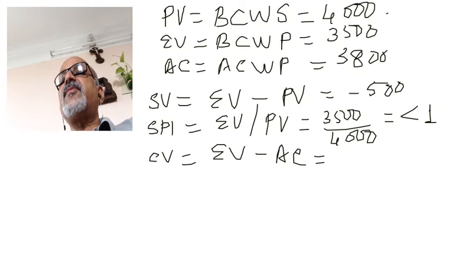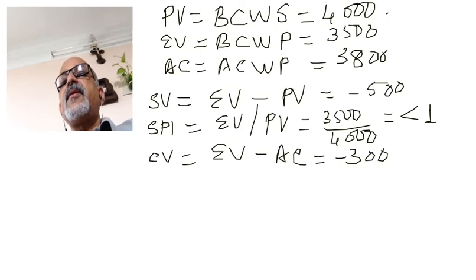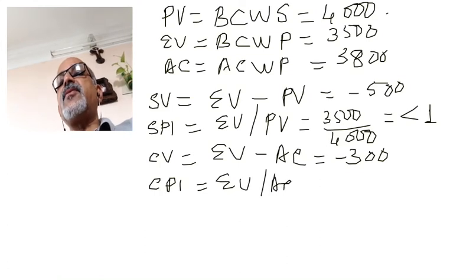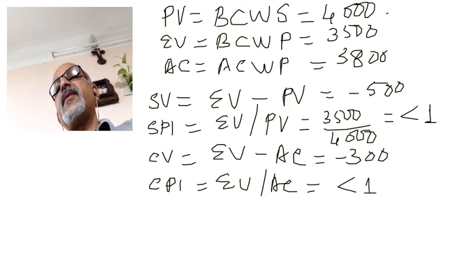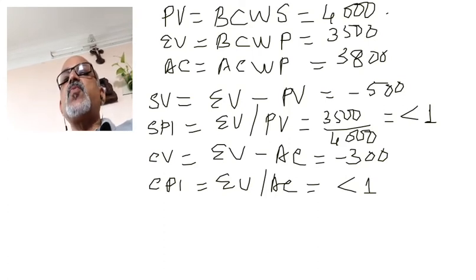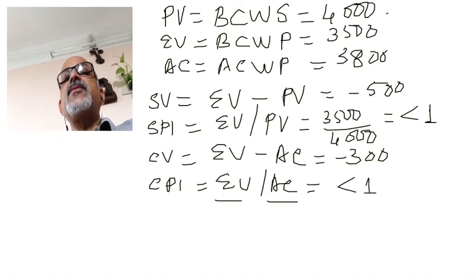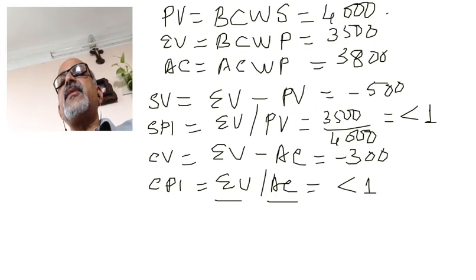Cost Variance (CV) = Earned Value minus Actual Cost = $3,500 − $3,800 = −$300. Cost Performance Index (CPI) = Earned Value divided by Actual Cost = $3,500 / $3,800, which is also less than one, indicating a cost overrun. If CPI equals one, earned value equals actual cost, meaning the project is within budget. If CPI is less than one, actual cost exceeds earned value and you are in trouble.